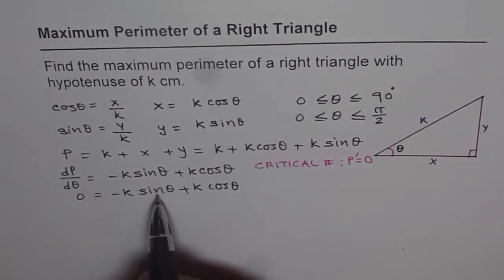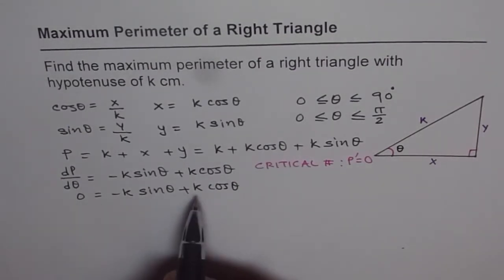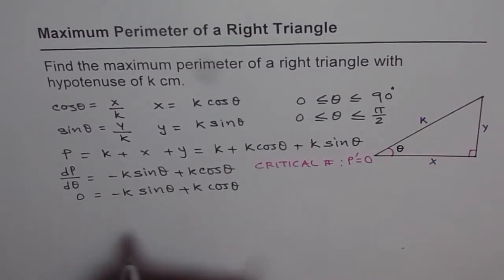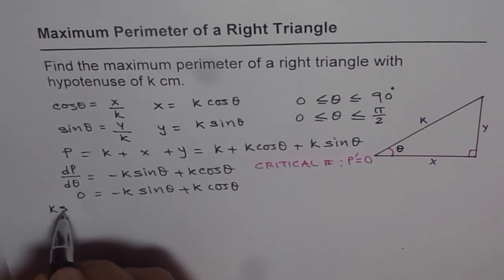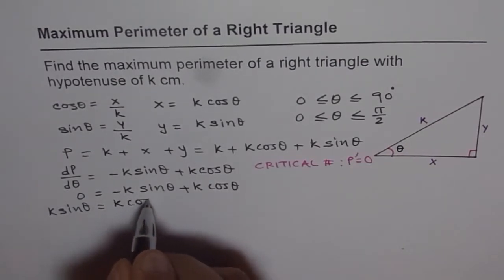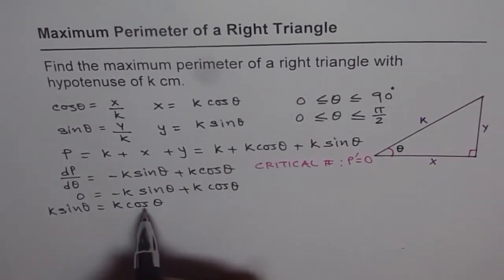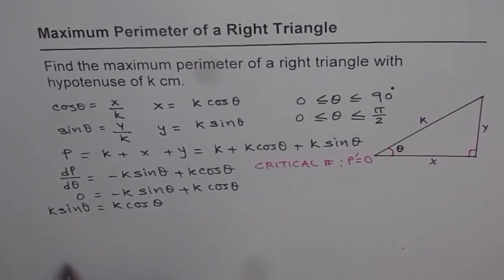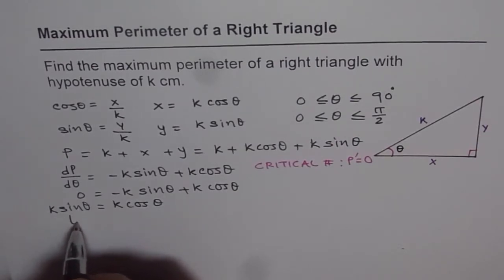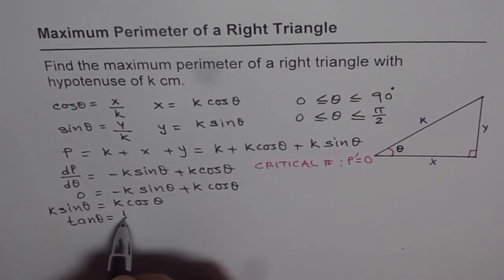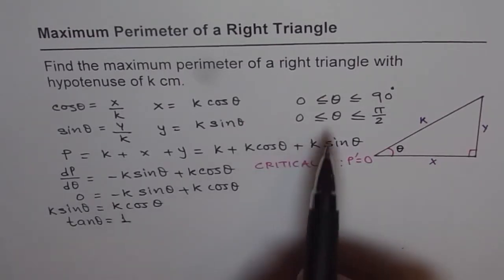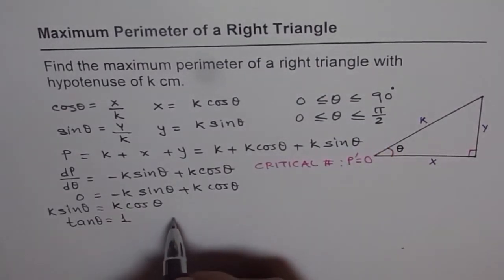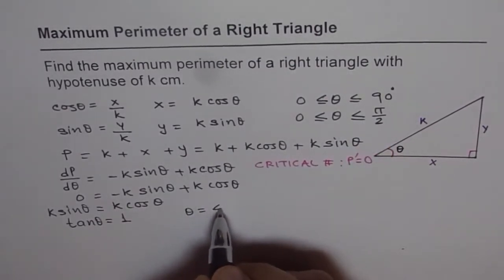To maximize the perimeter, we find the critical number by equating dP/dθ to 0. This gives: −k·sin θ + k·cos θ = 0, so k·sin θ = k·cos θ. Dividing both sides by k·cos θ gives tan θ = 1. When theta is between 0 and π/2, this means θ = 45 degrees.